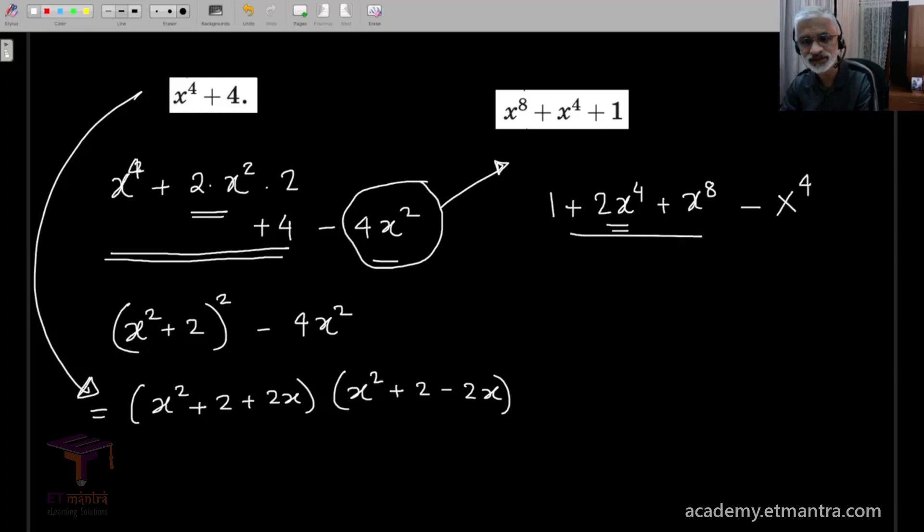And once again, you see this is a perfect square, this is a perfect square, so we can write this as x raised to 4 plus 1 whole square minus x raised to 4. And this can be factorized into two terms, x4 plus 1 plus x square multiplied by x raised to 4 plus 1 minus x square.